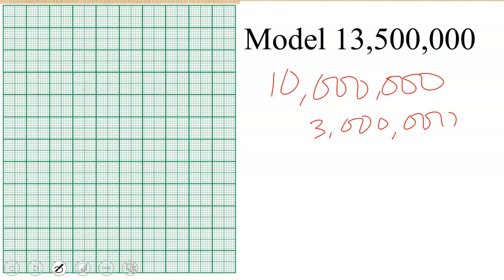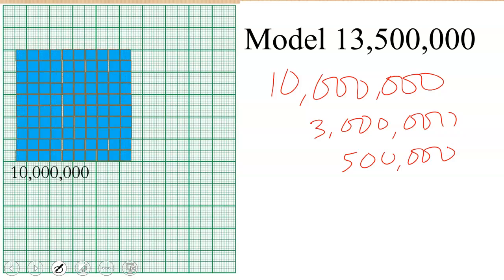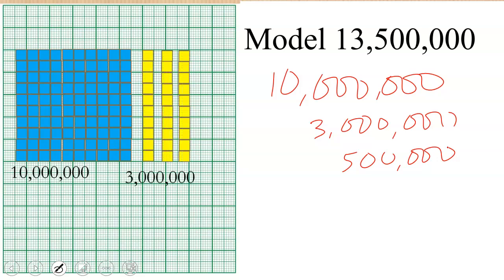So 10 million will give us this one, then 3 million - so three of the longs - will give us 3 million. Then we need 500,000, which means we need five of the hundred thousand. So that'll give us 500,000. So that is the model for 13 million 500,000.